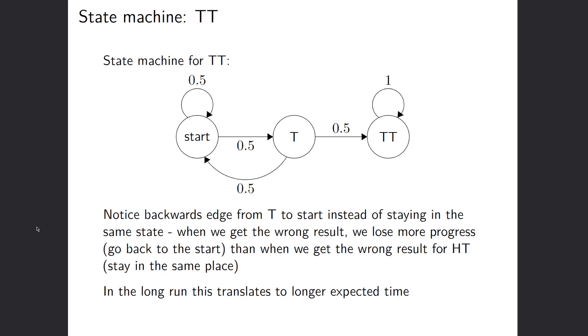So now let's look at the state machine for tails tails. So here at the start, if we flip a head, nothing happens, we stay here. If we flip a tail, then we get to go to the tail state where we've seen one tail.